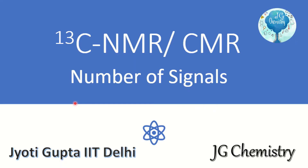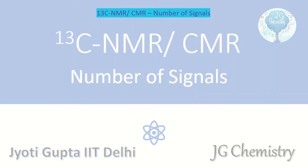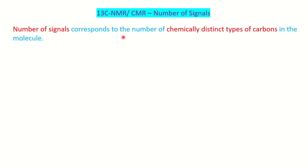Hello everyone, welcome to JG Chemistry. In today's class we are going to learn how to calculate the number of signals in CMR. CMR is 13C NMR and we will see how to find out the number of signals here.